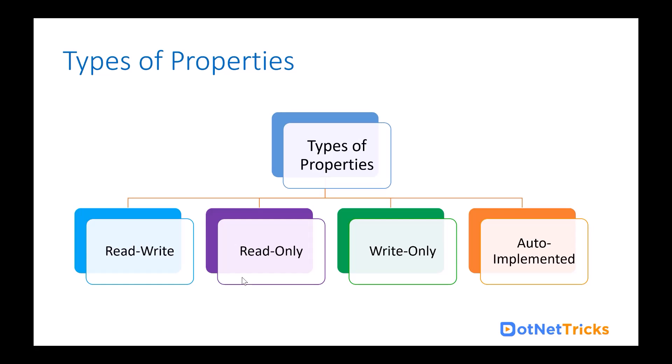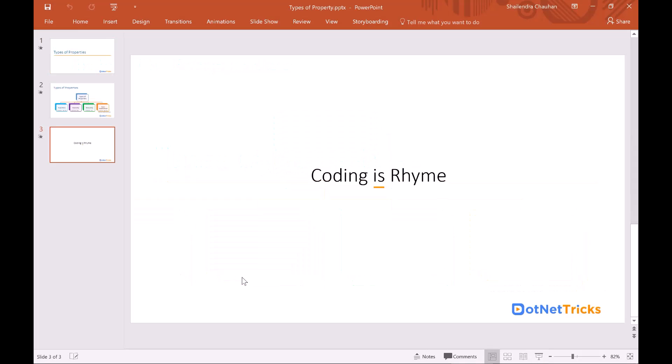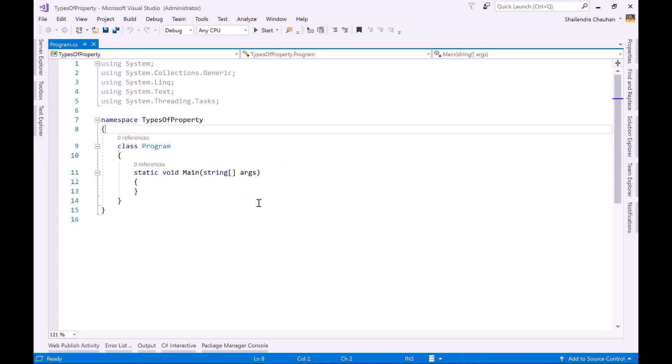Now let's see the different types of properties in C-Sharp. We have read-write properties, read-only properties, write-only properties, and auto-implemented properties. In a read-write property, both get and set accessors are defined. In a read-only property, only the get accessor is defined (or the set is private). In a write-only property, only the set accessor is defined (or the get is private). In an auto-implemented property, both get and set are declared without implementation.